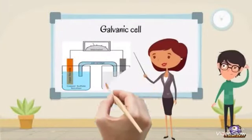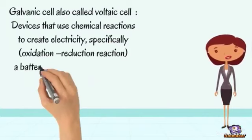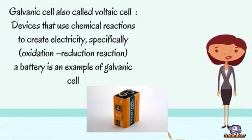Hi, today we will talk about galvanic or voltaic cells. Galvanic cells, also called voltaic cells, are devices that use chemical reactions to create electricity, specifically oxidation-reduction reactions. A battery is an example of a galvanic cell.